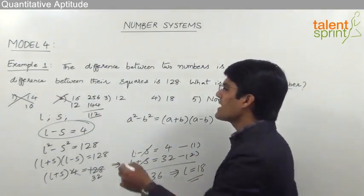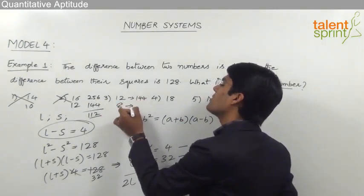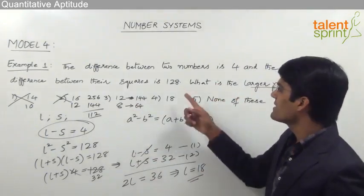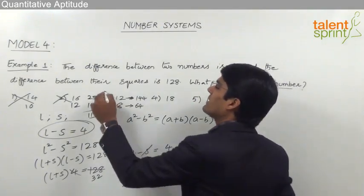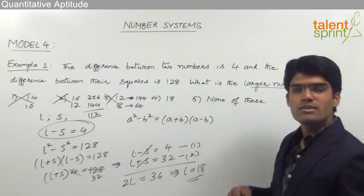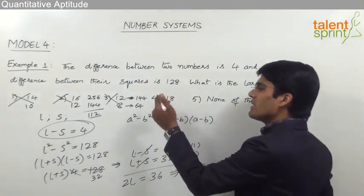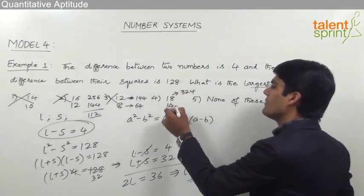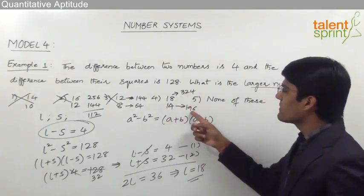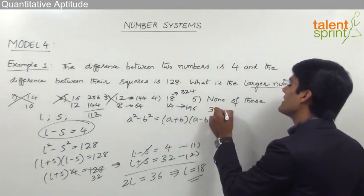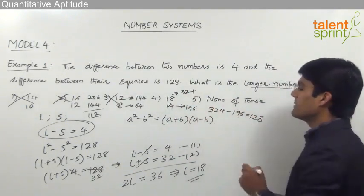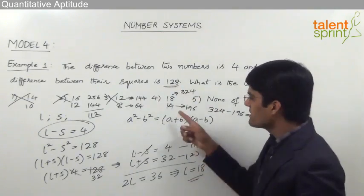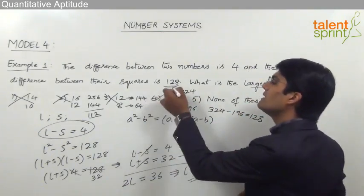For option 3, if the larger is 12 the smaller is 8. 12² = 144 and 8² = 64; 144 - 64 = 80, not 128, so option 3 is also cancelled. The remaining option is option 4: larger = 18, smaller = 14. 18² = 324 and 14² = 196; 324 - 196 = 128, which matches the given condition. So option 4 is the correct answer.